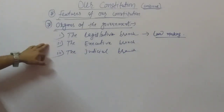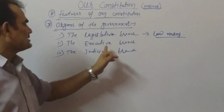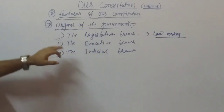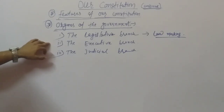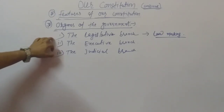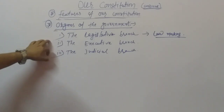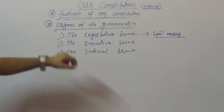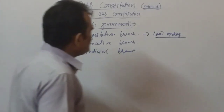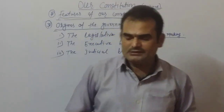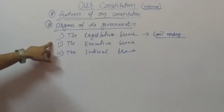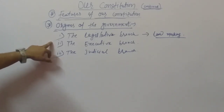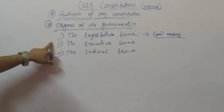The second point is the executive branch. The executive branch includes the president, the vice president, the prime minister, the council of ministers, and so on. The executive carries out the decisions made by the legislature.